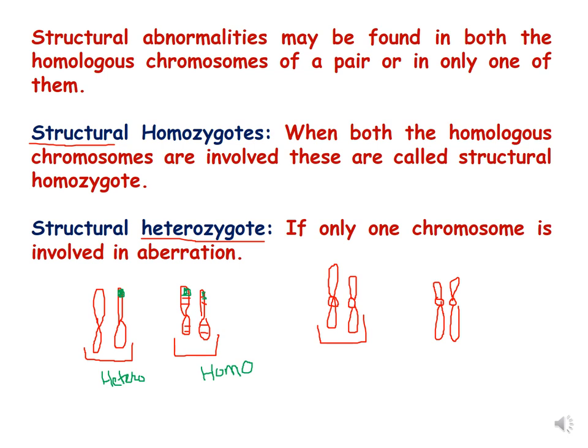Structural abnormalities may be found in both the homologous chromosomes of a pair or in only one of them. When the aberration is found in both chromosomes, it is known as a structural homozygote. When it is found in only one of the chromosomes, it is known as a structural heterozygote.